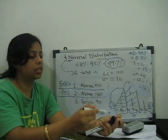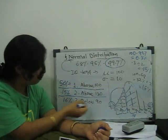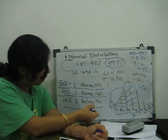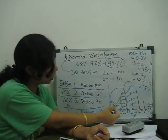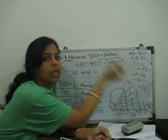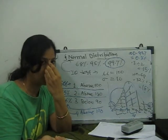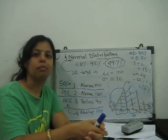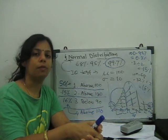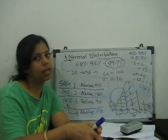Similarly, above 110 is also 16% by symmetry. So using the 68-95-99.7 rule we can approximately find out this data. In the next video we will talk about the standard normal distribution, where we have a table and how to use it to find standard normal distribution values. That's all for normal distribution — thank you very much.